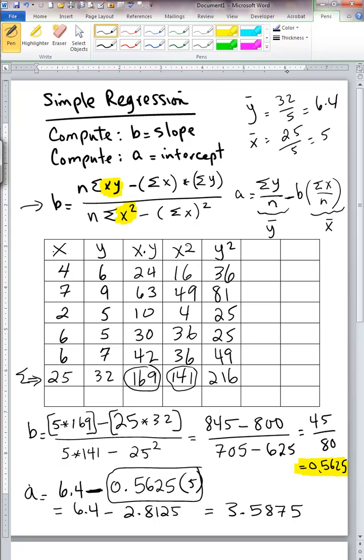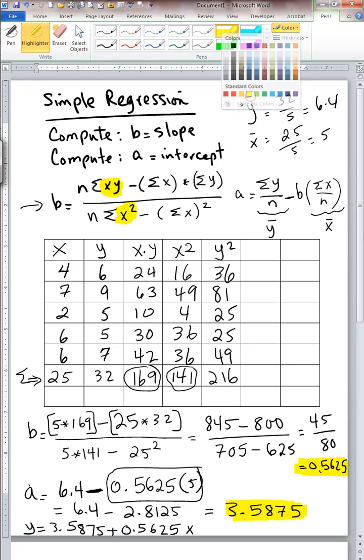And that right there is our intercept for the line. Therefore, our full equation is y equals 3.5875 plus 0.5625 times x. And that is our regression equation, simple regression equation, simple or linear regression equation. Thank you.